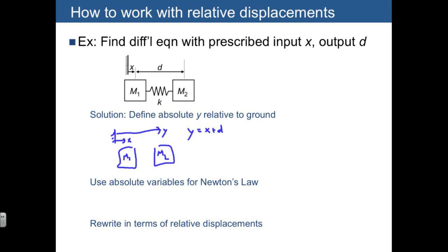Then we can use that variable when we apply Newton's law. So when we sum our forces, that's just going to be equal to fk, the force in the spring, is equal to m2 times y double dot. And we always want to apply Newton's law in an inertial reference frame. So we need an absolute displacement such as y in order to do that. An inertial reference frame has to be either fixed or moving at constant velocity.